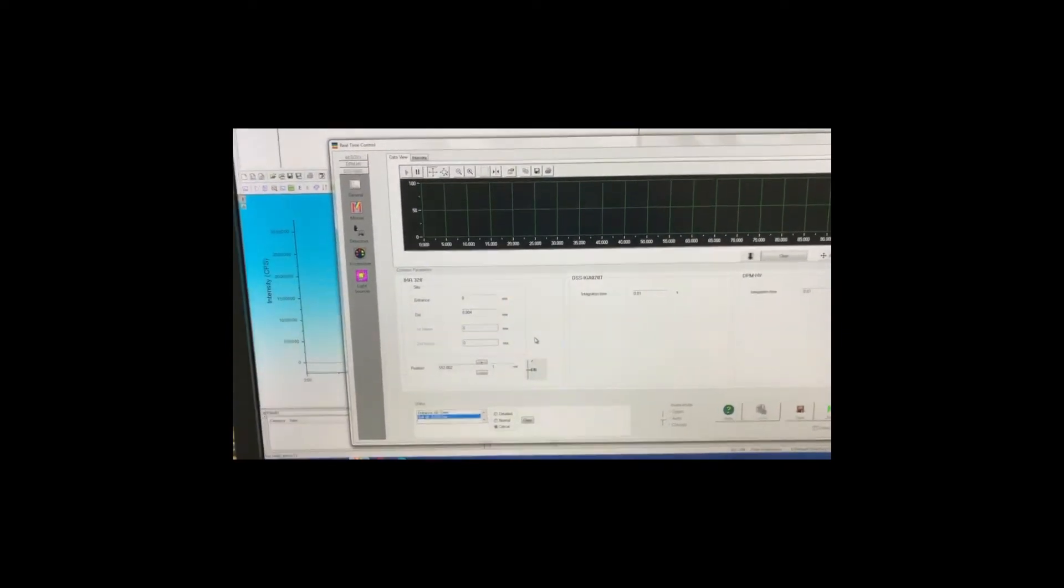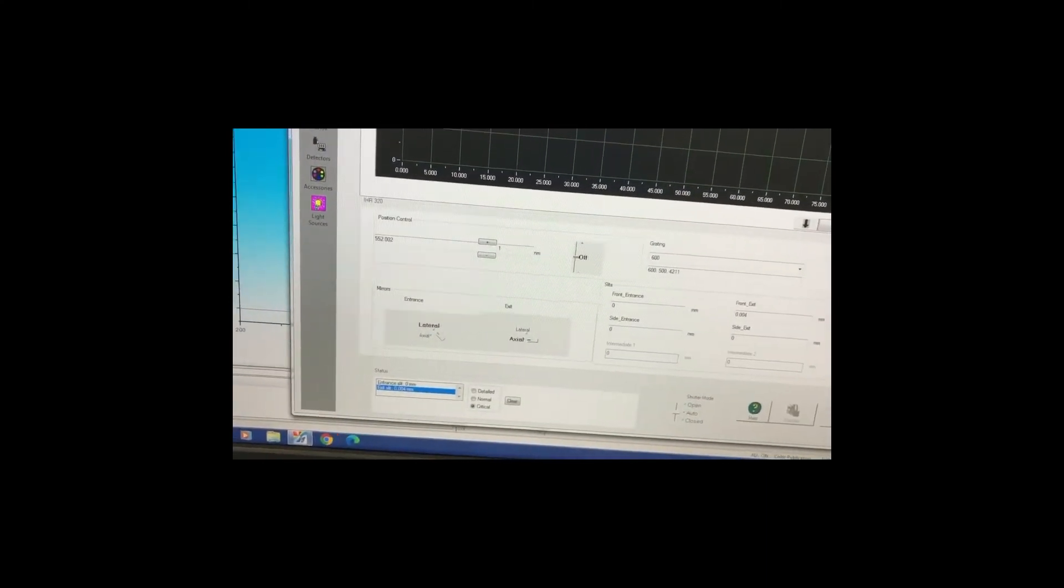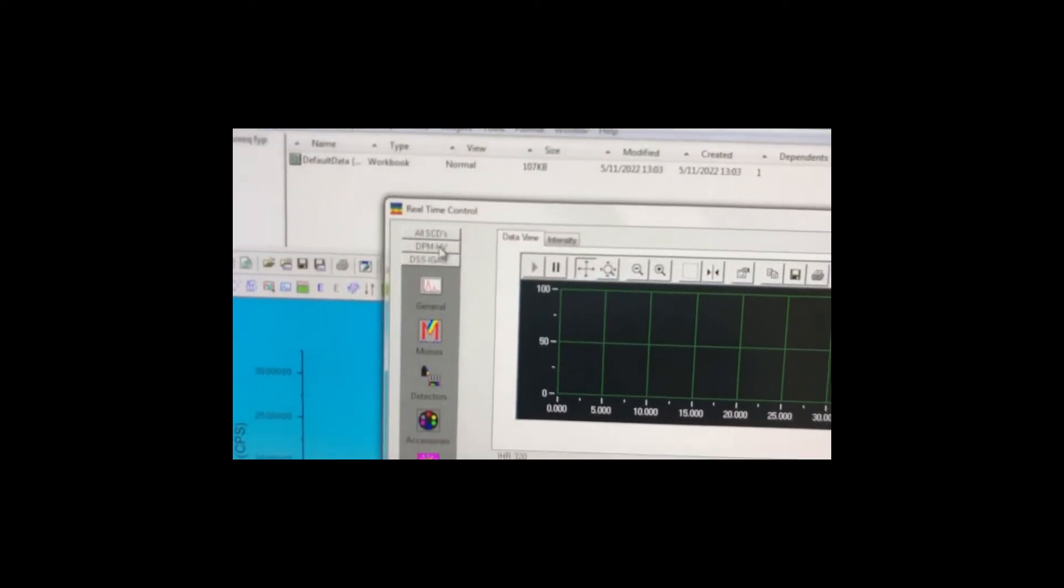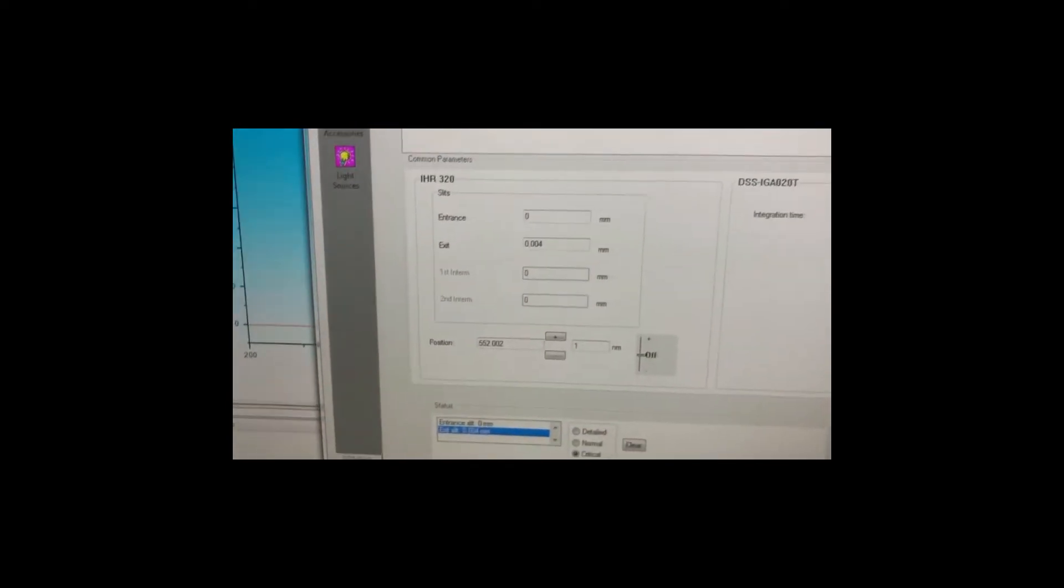The machine will move to position to 552. And then you click on the DPM or HV. Make sure that it is still 552 and then you click on the intensity.